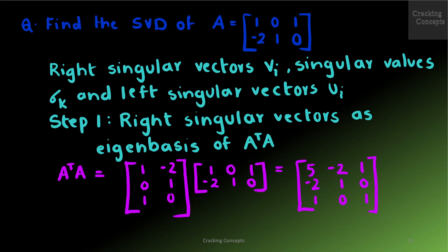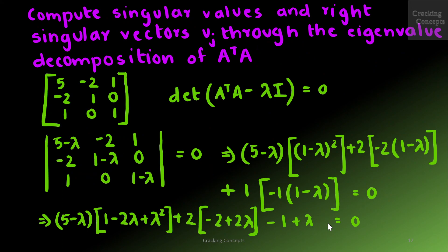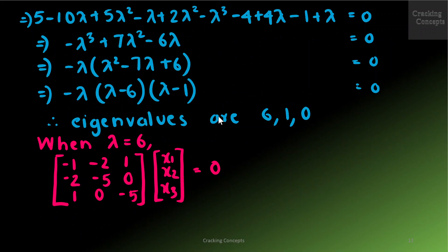Now we will see a problem where we are asked to find the SVD of a given matrix. We need to compute the right singular vectors Vj, the singular values σk, and the left singular vectors Ui. As the first step we find the right singular vectors, which are the eigenbasis of A^T A. We start by computing A^T A, and on substituting the values I get the resultant matrix. Then I need to compute the singular values and right singular vectors Vj through the eigenvalue decomposition of A^T A. Substituting into det(A^T A − λI) = 0 and expanding, I find the eigenvalues are 6, 1, and 0.